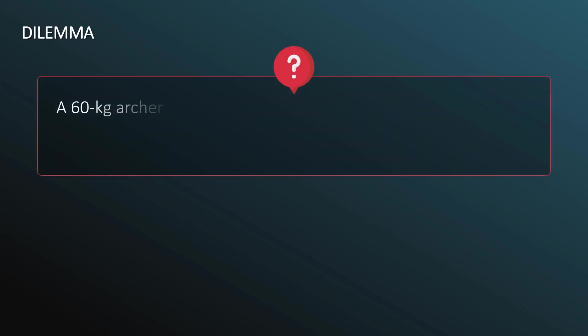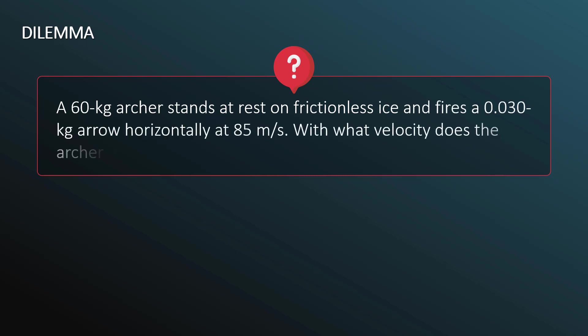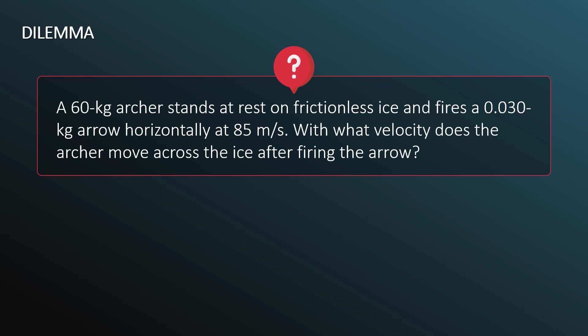First, we begin with a dilemma. A 60-kilogram archer stands at rest on frictionless ice and fires a 0.030-kilogram arrow horizontally at 85 meters per second. With what velocity does the archer move across the ice after firing the arrow?